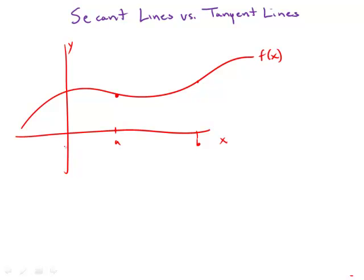how much does the function increase? In other words, we could just connect the dots, as it were, from a to b, and we would get something called a secant line.